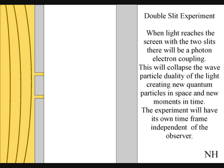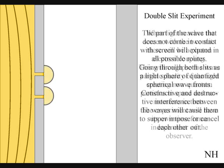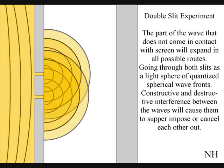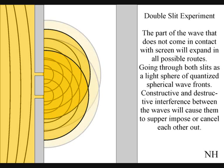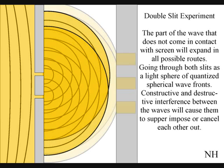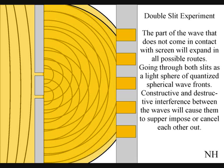Light waves will come in contact with the plate with the two slits, collapsing into new photons with a position in space and time. The light waves that do not come in contact with the plate will go through both slits. The waves will then form constructive and destructive interference over a period of time, and an interference pattern will build up on the screen photon by photon.